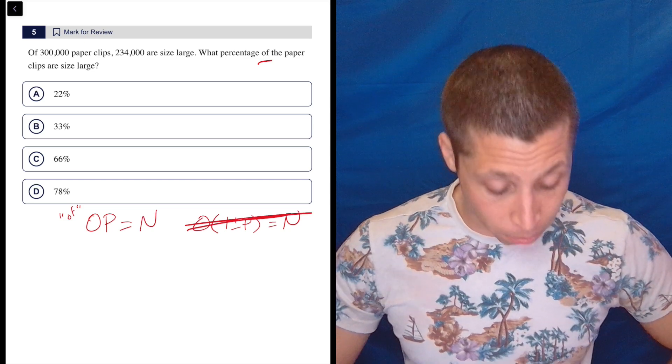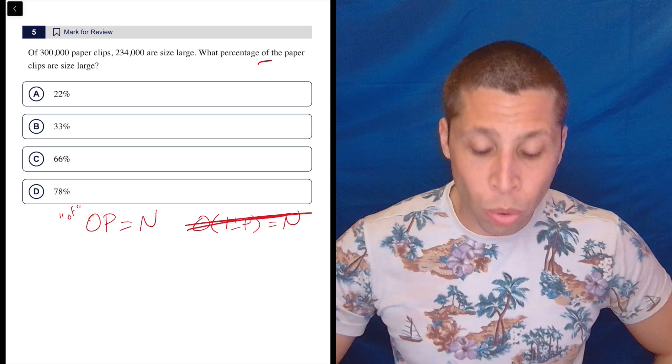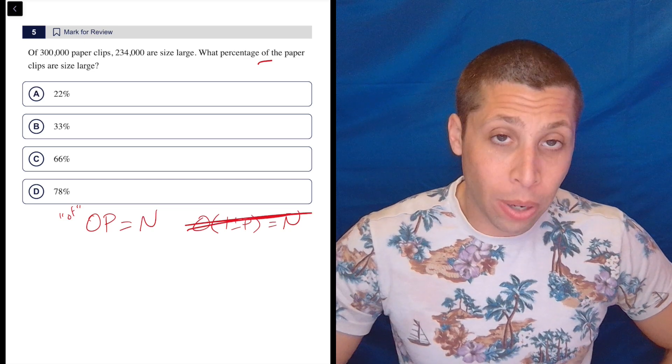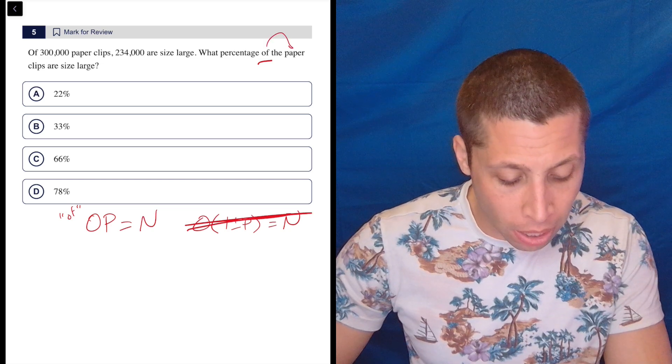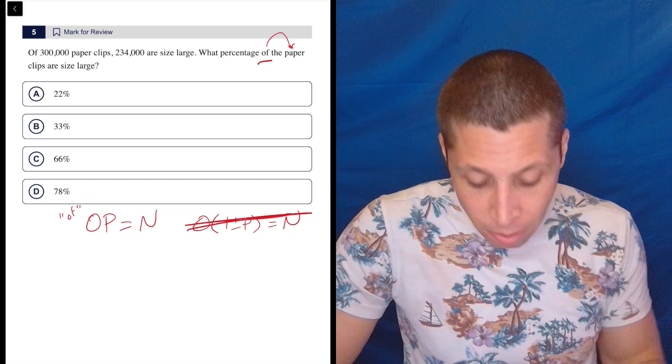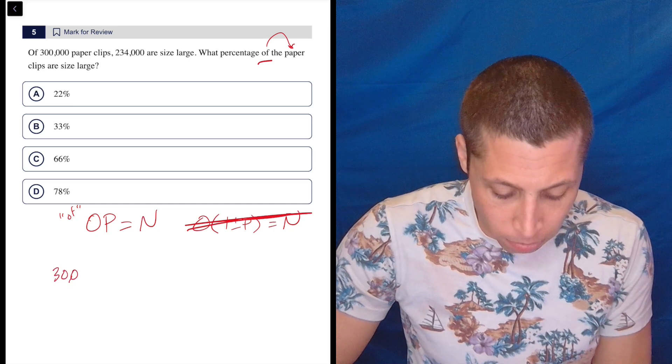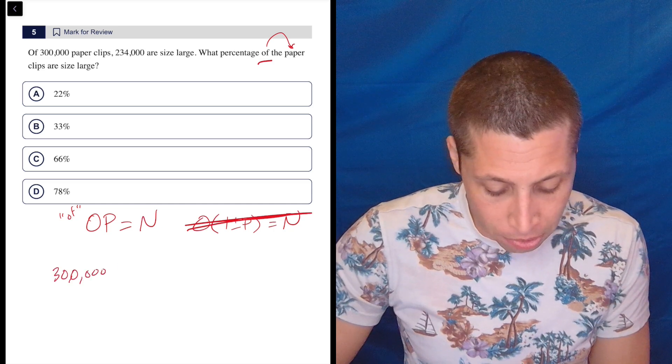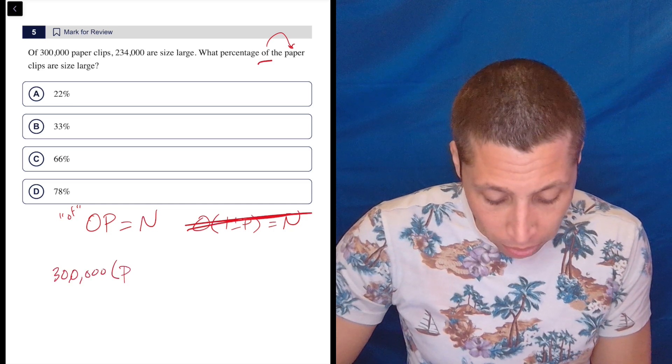And the O, P and N stand for some pretty simple things. The O is the original amount, and that's also kind of what the of is pointing to. So the of is pointing to the number of paperclips. There are 300,000 paperclips. The P is the percent, so we're going to find that.